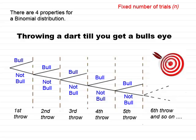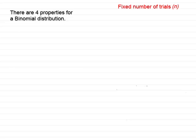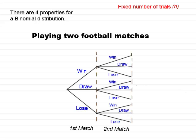So let's have a look at another tree diagram which has a finite, fixed number of trials. Here's one: the playing of two football matches. I've got my fixed trials — each one represents a match, the first match and the second match. You'll notice that in any match you can either win it, draw, or lose. And then if you've won the first match you could go on to win the second match, draw the second match, or lose the second match.